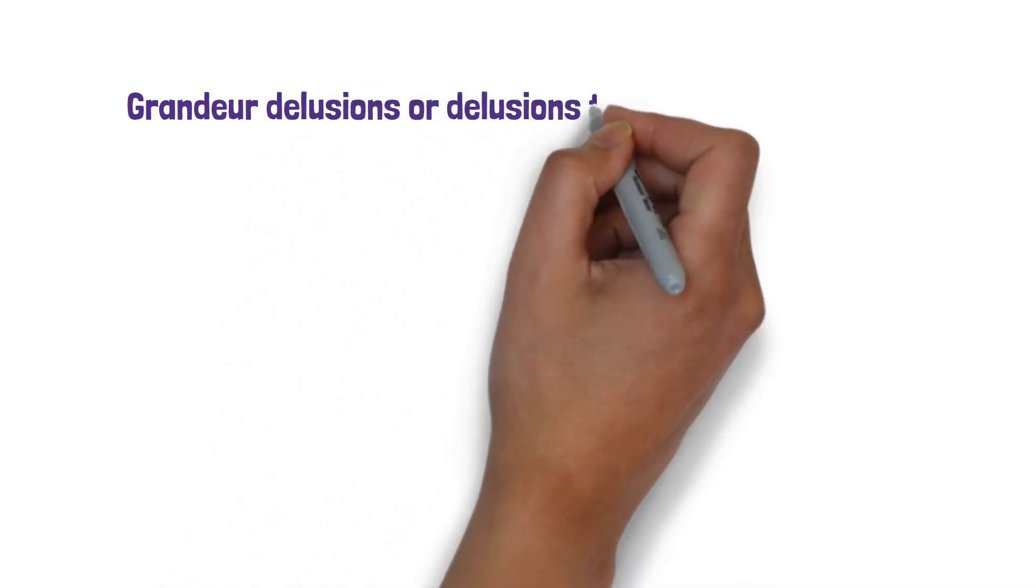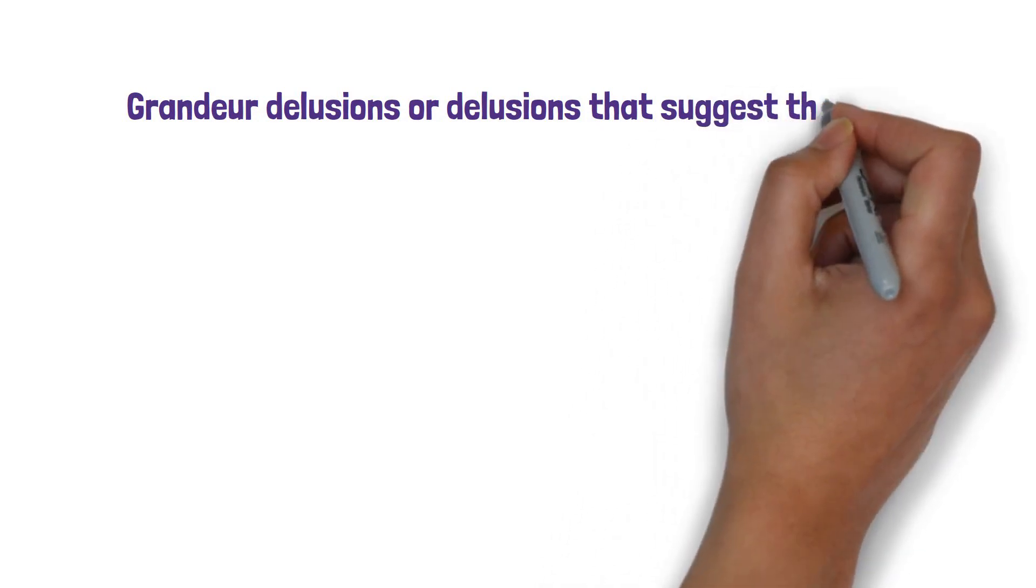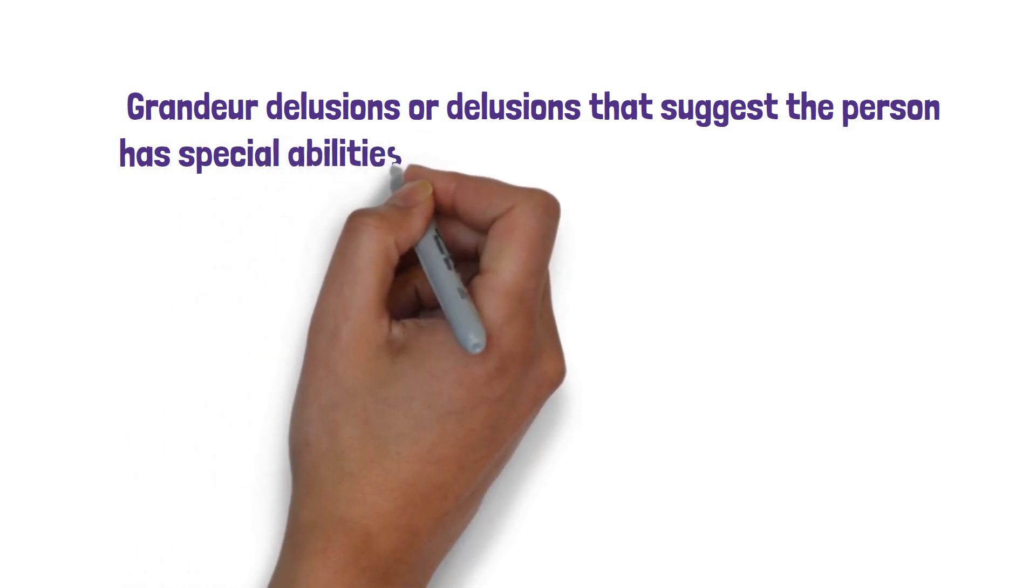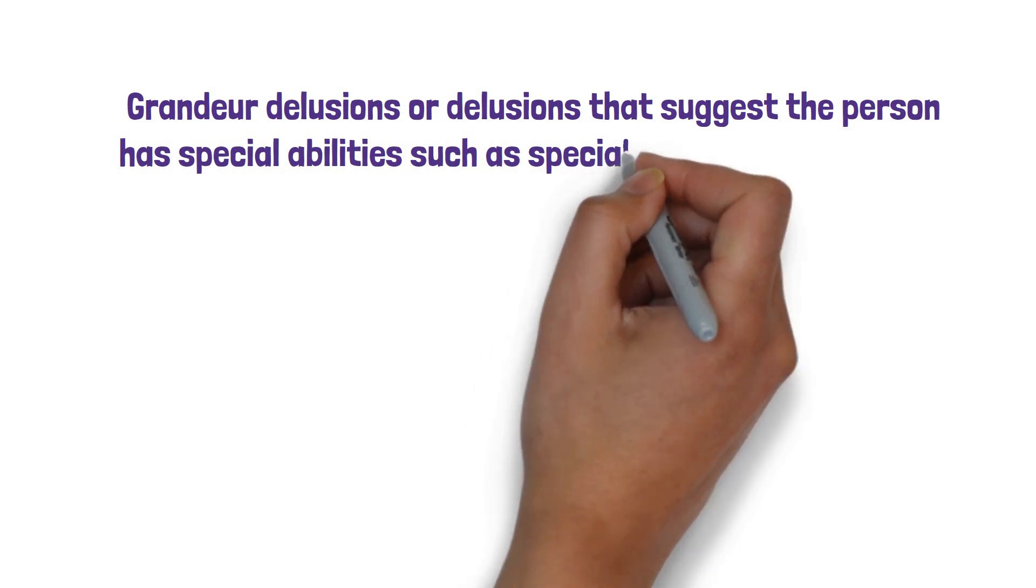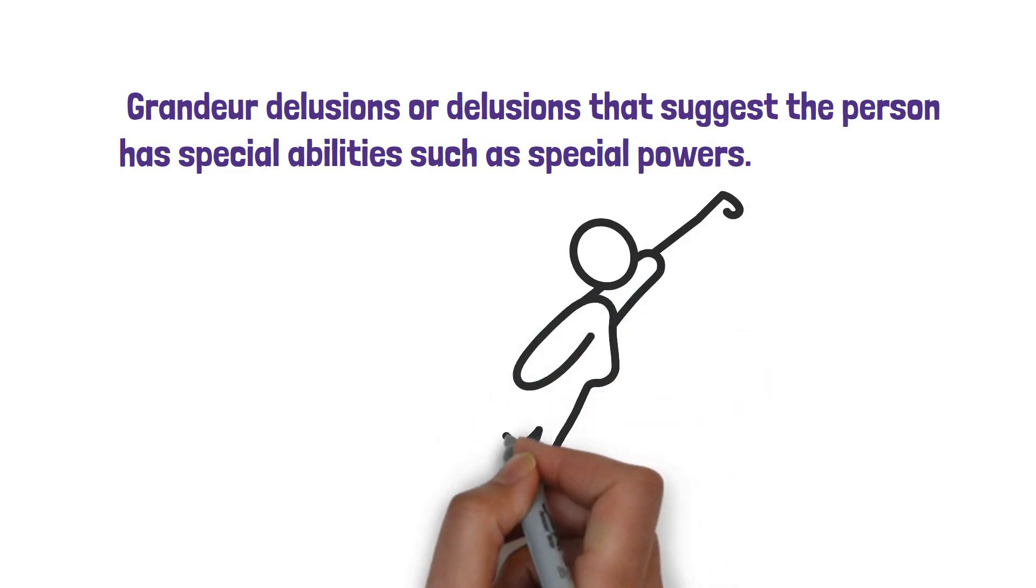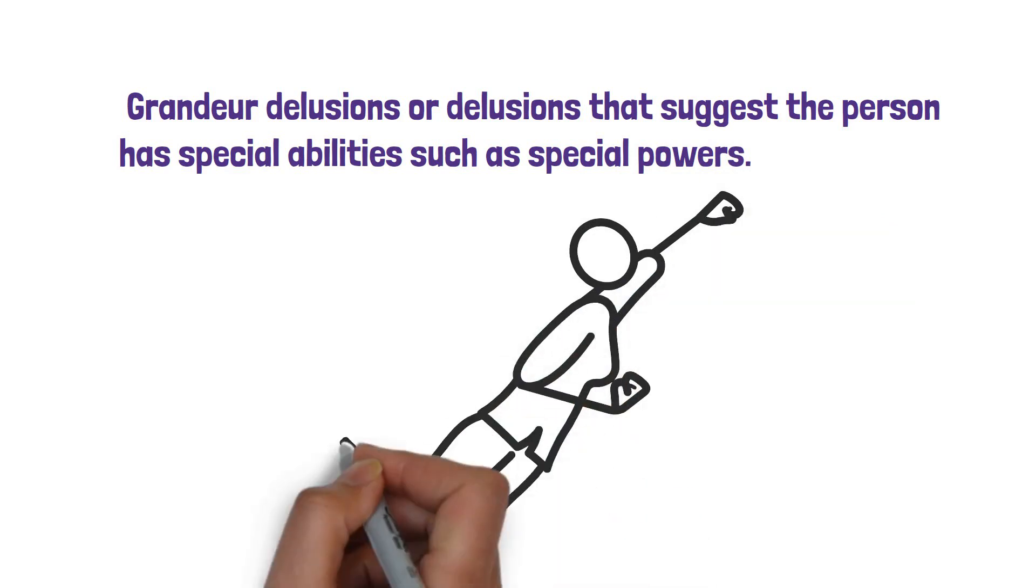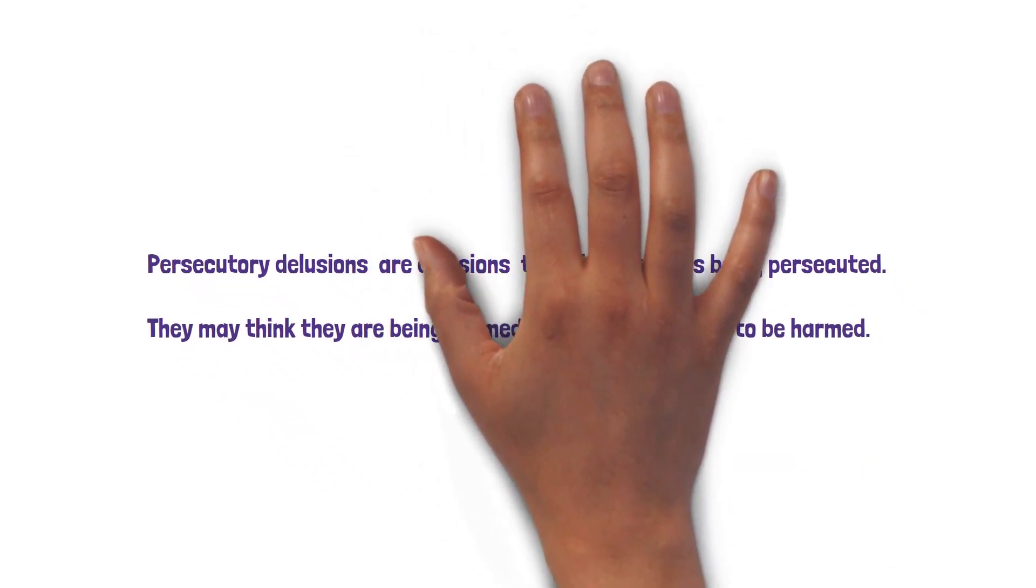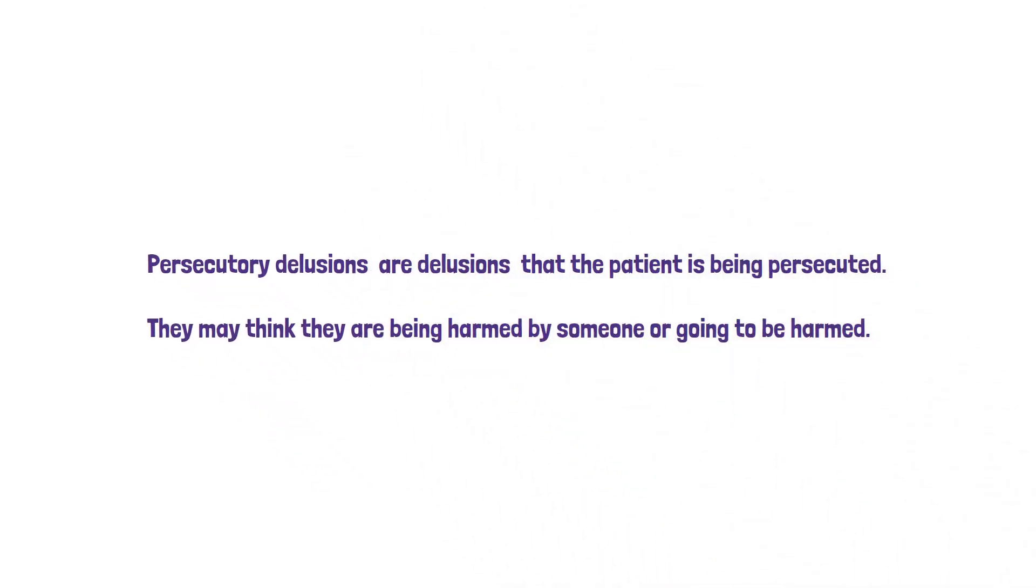Grandeur delusions are delusions that suggest that the person has special abilities such as special powers. So if a patient believed they could fly or that they were godlike. Nihilistic delusions are delusions of no longer existing or decomposing. Persecutory delusions are delusions that the patient is being persecuted. They may think that they are being harmed by someone or that someone is going to harm them, and this obviously can be very frightening for the patient.